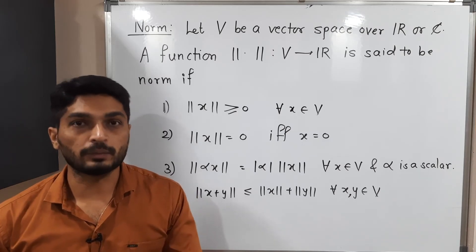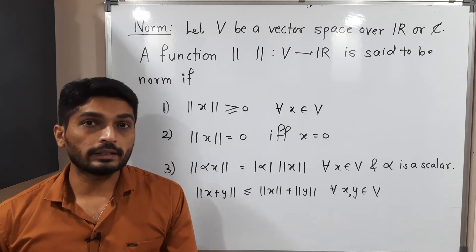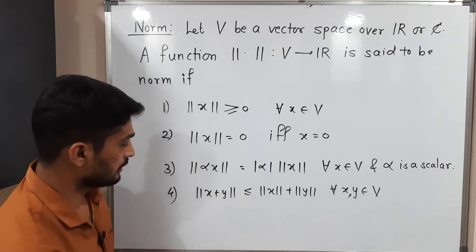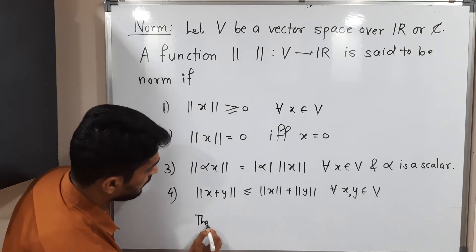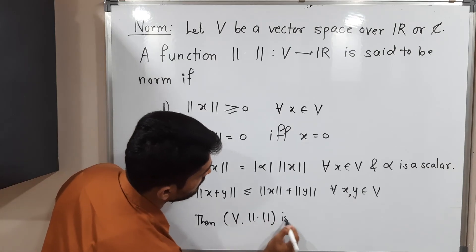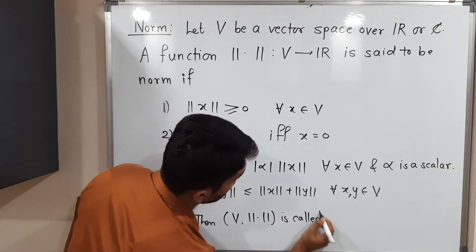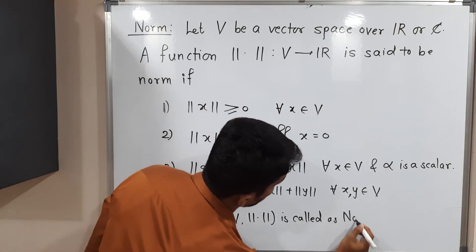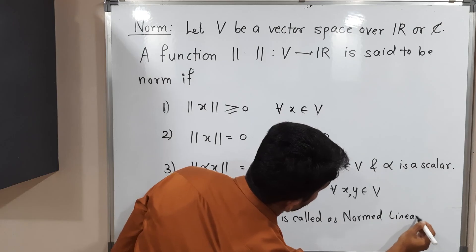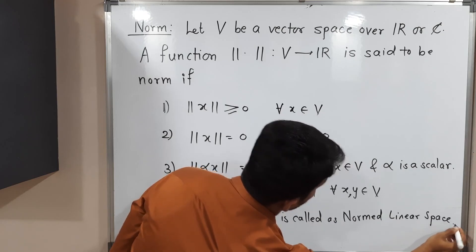We call V comma norm a normed linear space. V comma norm is called a normed linear space.